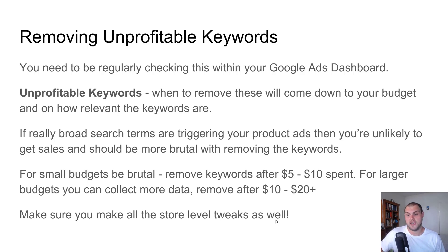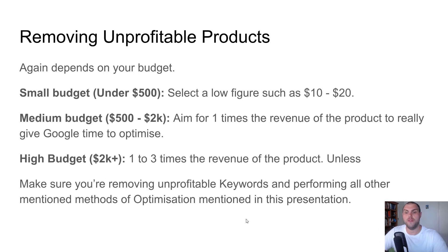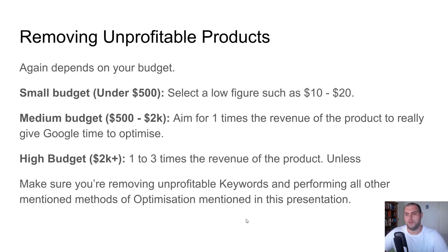On top of this, make sure you do all the store level tweaks — that's going to really improve your chance of success. So removing unprofitable products: go within your product tab and remove these products. Anything where you're burning money and clearly not even getting add-to-cart or sales — also check the bounce rate. If you have a super high bounce rate, something's wrong. Work out: is your page loading too slowly? Are there other tweaks you can make to improve it, like getting better images?